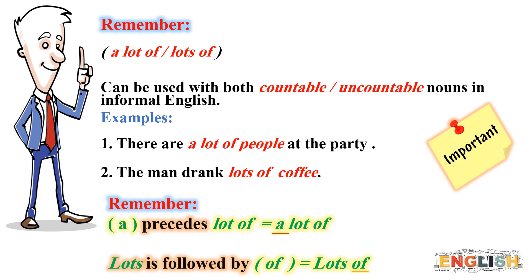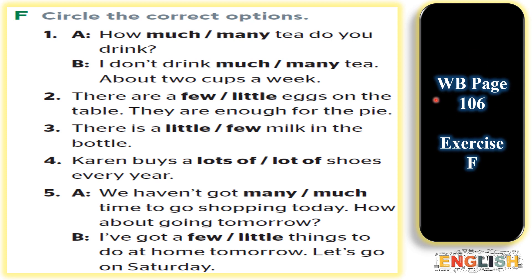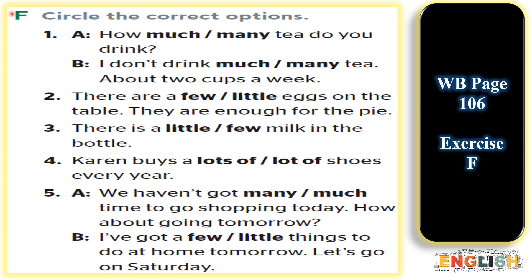In this slide, dear students, you have important rules to remember. Quantifiers that are used with uncountable nouns are: 'much', 'little', 'a little'. Examples: 1. There is little water left for me to drink — note that the quantifier 'little' is followed by the uncountable noun 'water'. 2. There is a little coffee in the cup — 'a little' is followed by the uncountable noun 'coffee'. 3. How much money have you got? — 'how much' is followed by the uncountable noun 'money'.